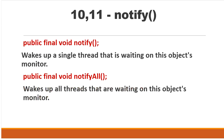What are notify and notifyAll methods? There are two methods: public final void notify(), which wakes up a single thread that is waiting on the same object. If we want to notify multiple threads at a time, then we can use notifyAll.